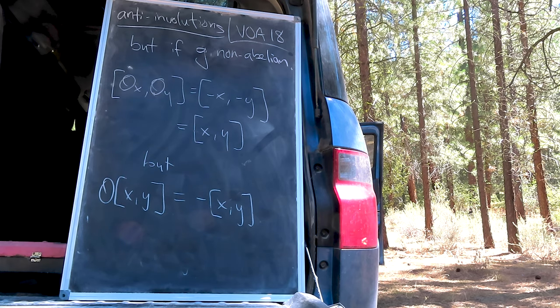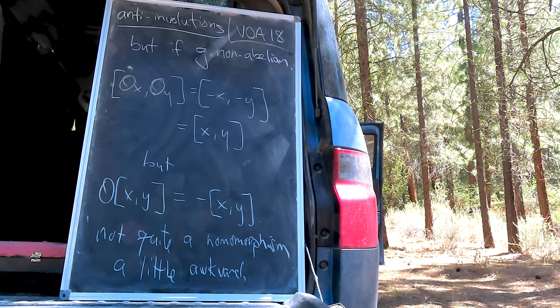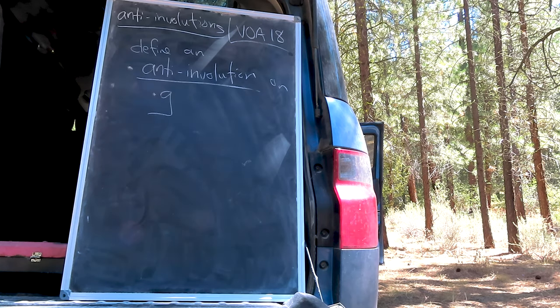If G is not abelian, the map theta equals minus one kind of fails to be a familiar homomorphism and is a little bit awkward. This awkwardness leads us to a new definition, the anti-involution.